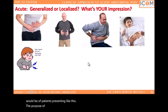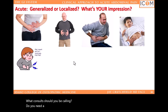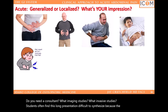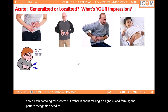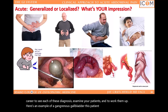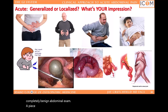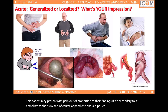The purpose of this presentation has been an attempt at making you think like a clinician — how can you put all your patient's information together to order the proper diagnostic studies? Do you need a consultant? What imaging studies? What invasive studies? Students often find this long presentation difficult to synthesize because the information isn't about each pathological process, but rather is about making a diagnosis and forming the pattern recognition needed to support these diagnoses. Here's an example of a gangrenous gallbladder — this patient may actually present with a completely benign abdominal exam. A piece of infarcted small bowel — this patient may present with pain out of proportion to their findings if it's secondary to an embolism to the SMA. And of course, appendicitis and a ruptured aneurysm — all of these will gain your attention very quickly.